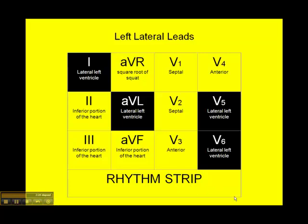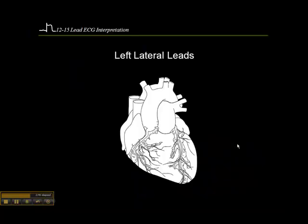These are the lateral leads, fed by the circumflex artery in virtually all cases. V5 and V6 are low lateral leads, while lead 1 and AVL are high lateral leads. If you had ST elevation in all four of these leads, you're dealing with a proximal occlusion of the circumflex. If you had ST elevation in only V5 and V6, you're looking at a more distal occlusion of the circumflex.